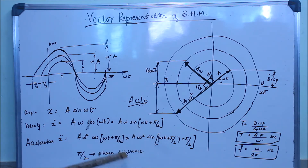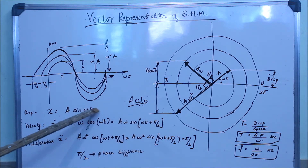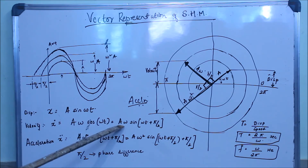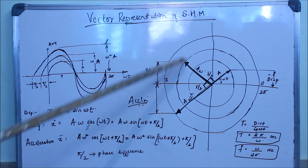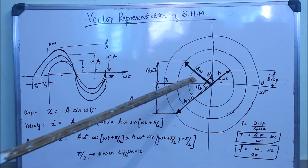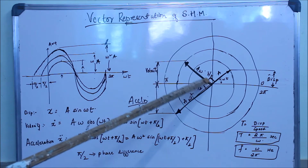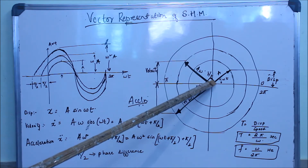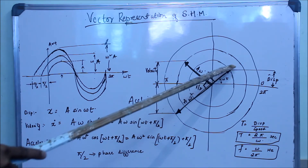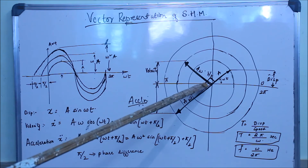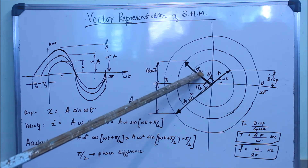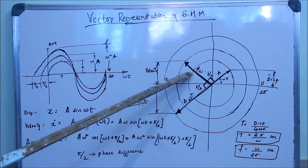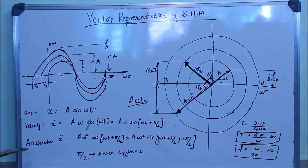You can notice that there is a phase difference of 90° between the velocity and displacement vectors, and the amplitude is multiplied by ω. In the circular vector diagram, the velocity vector has an angular difference of 90° (π/2) with respect to the displacement vector, and its radius is increased to Aω.